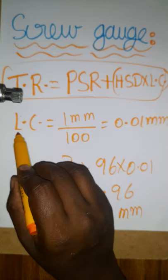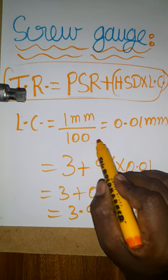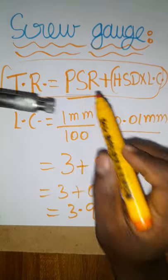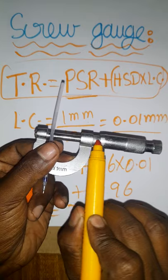The least count of the screw gauge is 1 millimeter divided by 100 divisions, which equals 0.01 millimeter. Now for the pitch scale reading - see here, the pitch scale reading I'm getting is 3.